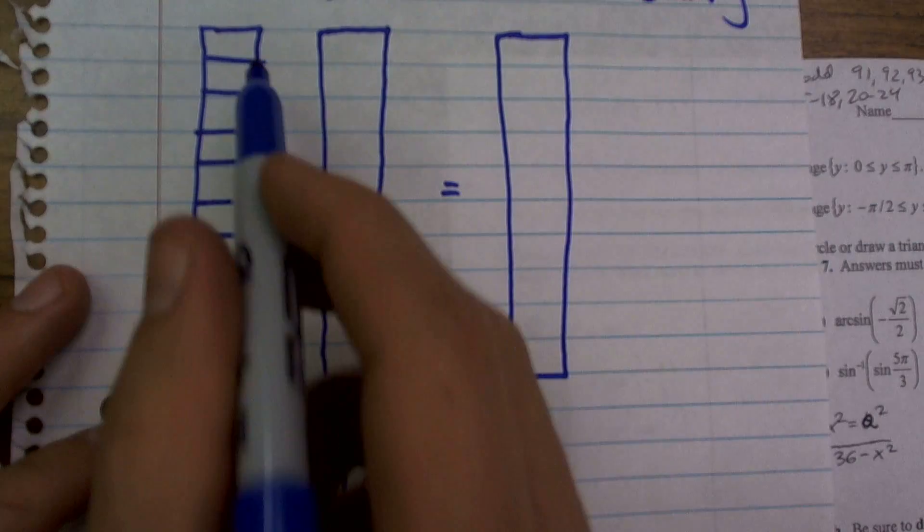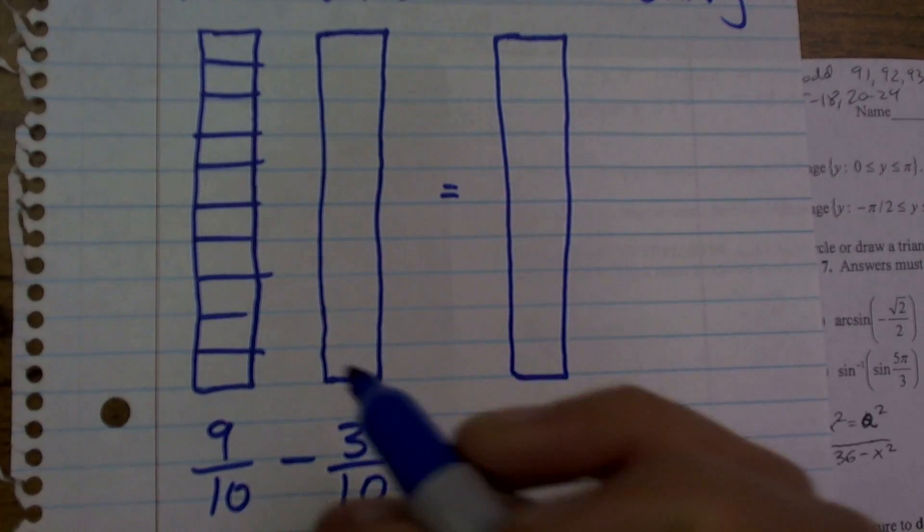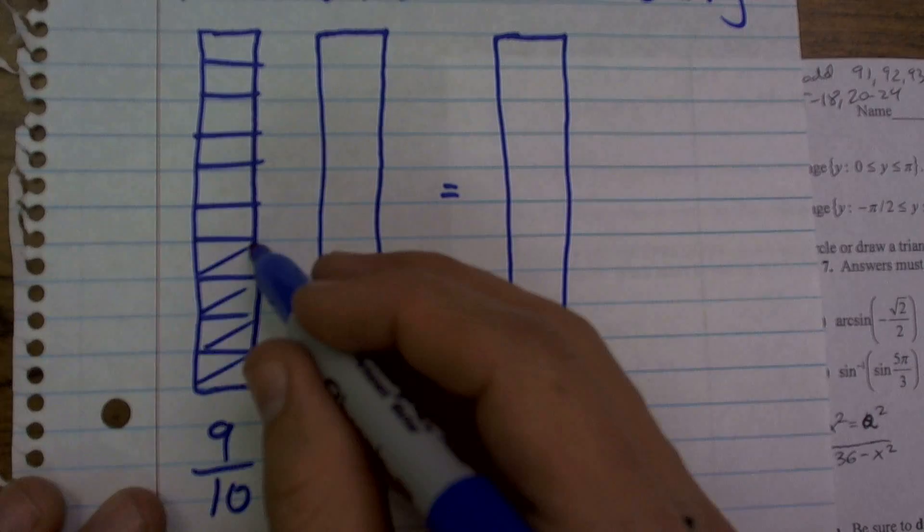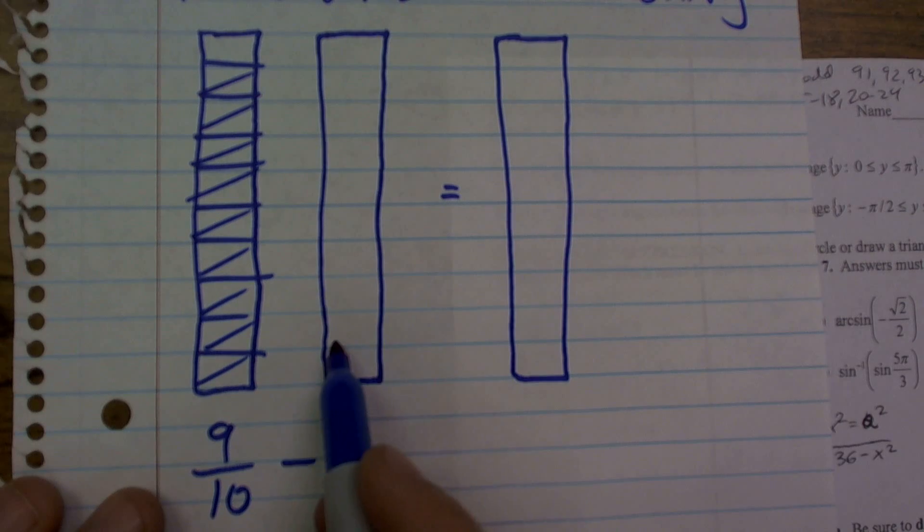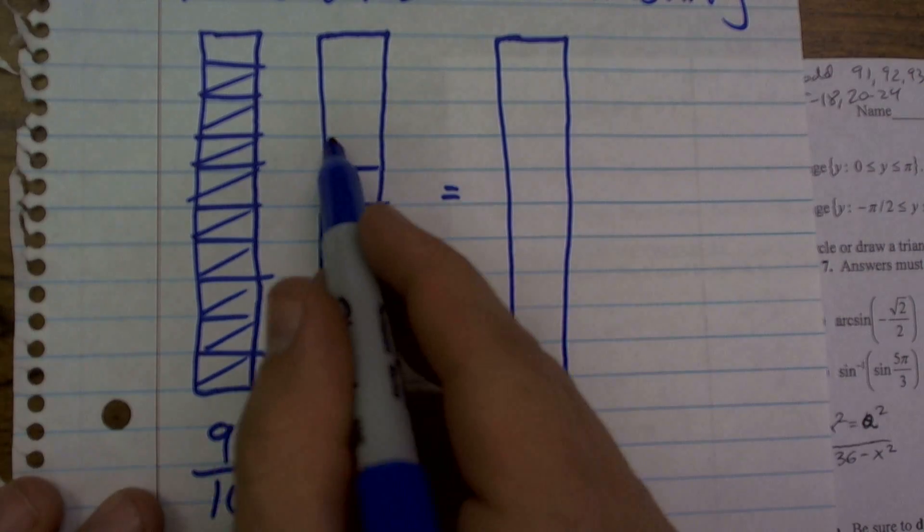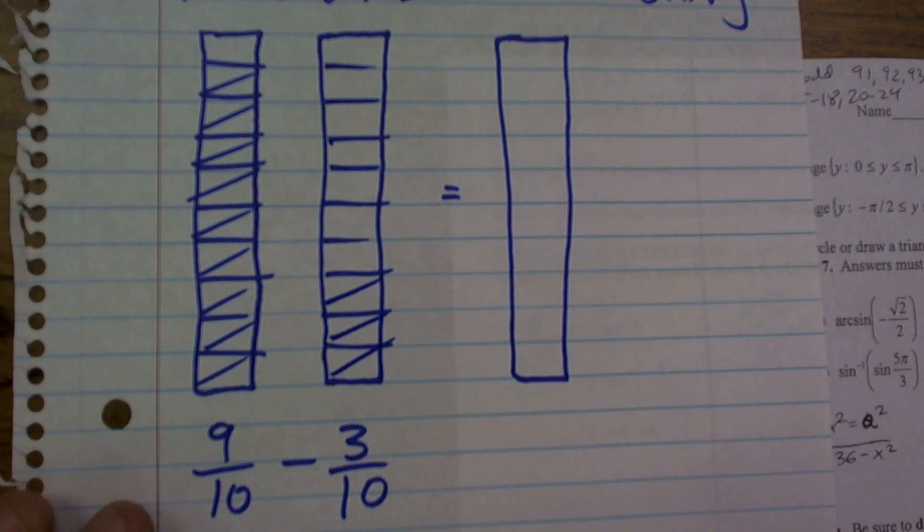Since it's 10, I'm going to separate this into 10 equal parts. And when I'm selecting 9, that means I'm going to select 9 of those parts. And then minus 3/10 - I broke it up into 10 sections, and I'm going to only select 3 of them.